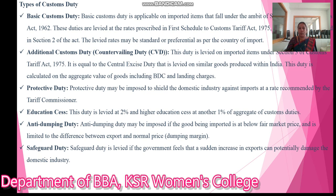Next is Protective Duty. Protective Duty may be imposed to shield the domestic industry against imports at a rate recommended by the Tariff Commissioner. Next is Educational Cess. This duty is levied at 2% and Higher Education Cess at another 1% of the aggregated custom duties.